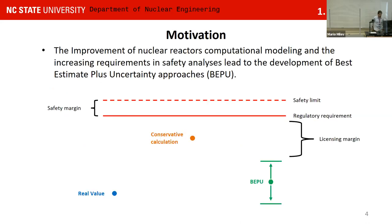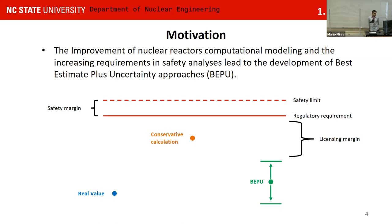Let's start with the introduction. The general motivation of this subject is the improvement of nuclear reactor modeling and the decrease of requirements in terms of safety analysis, leading towards the development of what we call best estimate plus uncertainty approaches, or in short, BEPU. In a regulatory context, we have safety limits imposed by the physics — for example, the fuel melting temperature — and regulatory requirements add a safety margin on these limits to be more sure about our licensing process.